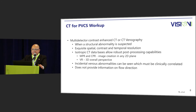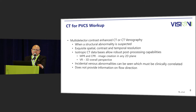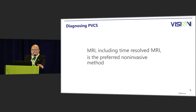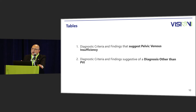Multi-detector contrast-enhanced CT is used when structural abnormality is suspected, offering exquisite spatial, contrast, and temporal resolution. Isotropic CT databases allow robust post-processing: multi-planar reformation, curved planar reformation for 2D images, and volume rendering for 3D perspective. Incidental venous abnormalities must be clinically correlated, and CT does not provide information on flow. For the most part, MRI including time-resolved MRI is the preferred non-invasive method.